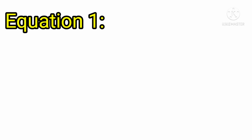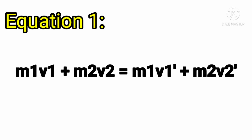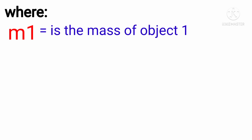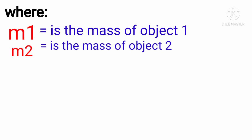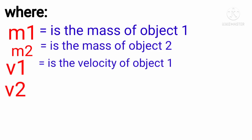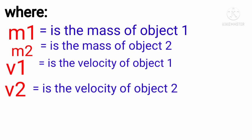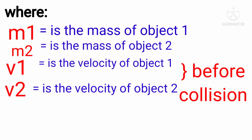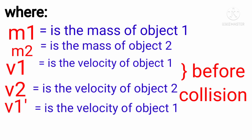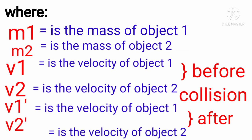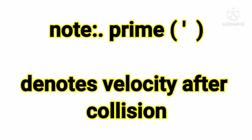If you have two objects in a collision, you can rewrite the equation, where M sub 1 is the mass of object 1, M sub 2 is the mass of object 2, V sub 1 is the velocity of object 1, and V sub 2 is the velocity of object 2 — before the collision. V sub 1 prime is the velocity of object 1 after the collision, and V sub 2 prime is the velocity of object 2. By the way, if you find this prime symbol, it denotes velocity after collision.